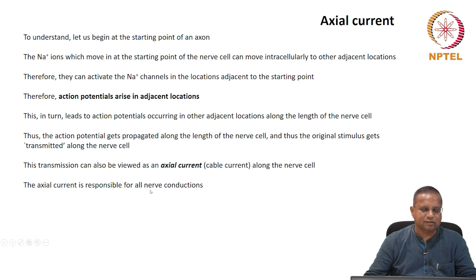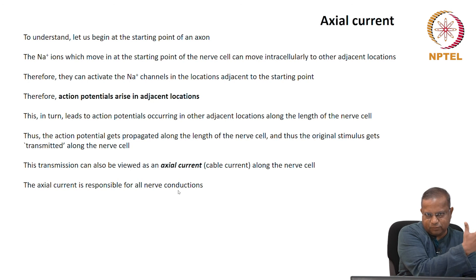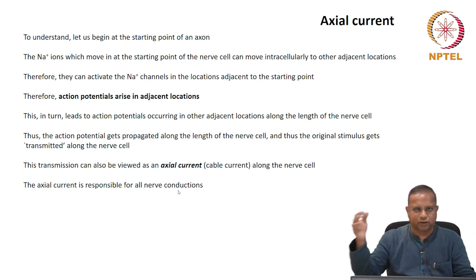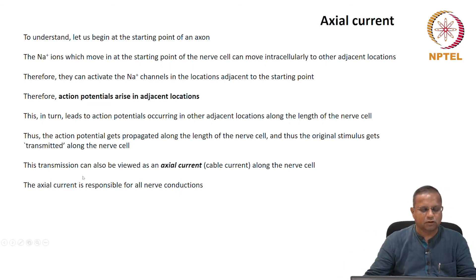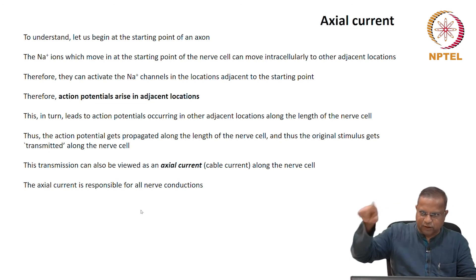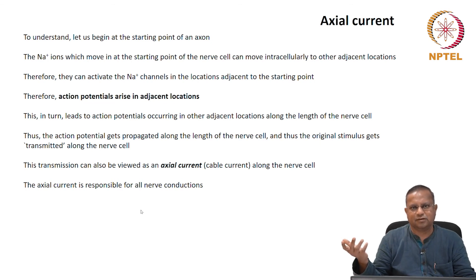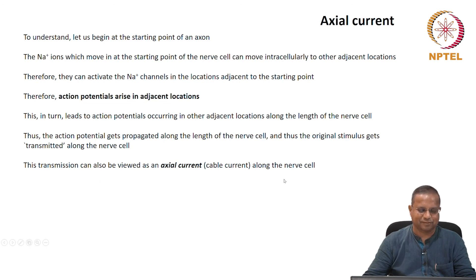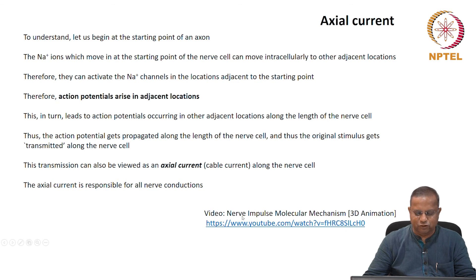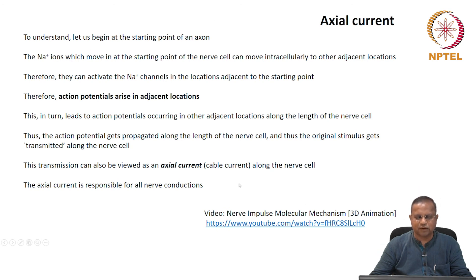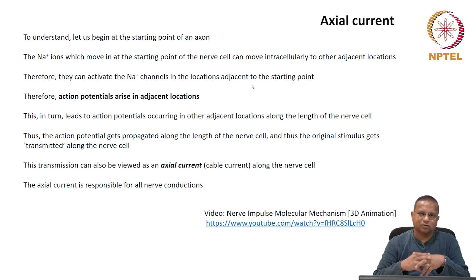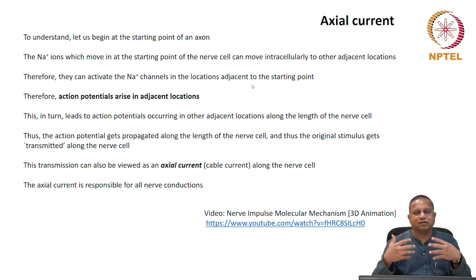The axial current is responsible for all nerve conduction, either from the sensory organs to the brain or from the brain to other parts of the body such as muscles. All of this is possible because of the series of action potentials, viewable as an axial current, and it all happens on the order of milliseconds or less — which is amazing. Please watch the video titled 'Nerve Impulse Molecular Mechanism 3D Animation'; the link is provided. It will explain this in visual form and make it easier to internalize.